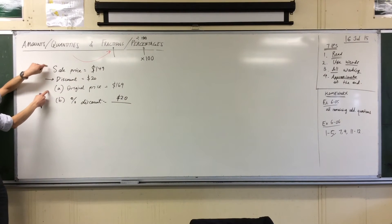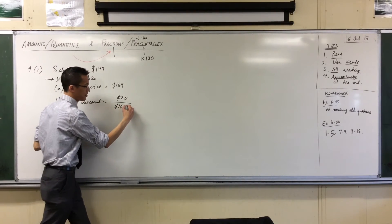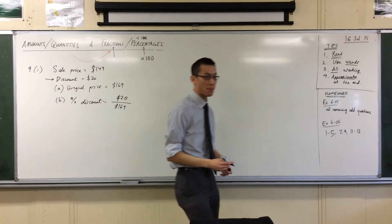To get a percentage discount, I'm going to be dividing. Now which one, the sale price or the original price? The original price, because you've already taken it off. Therefore I'm dividing by $169. That's kind of why Part A says work out the original price first.